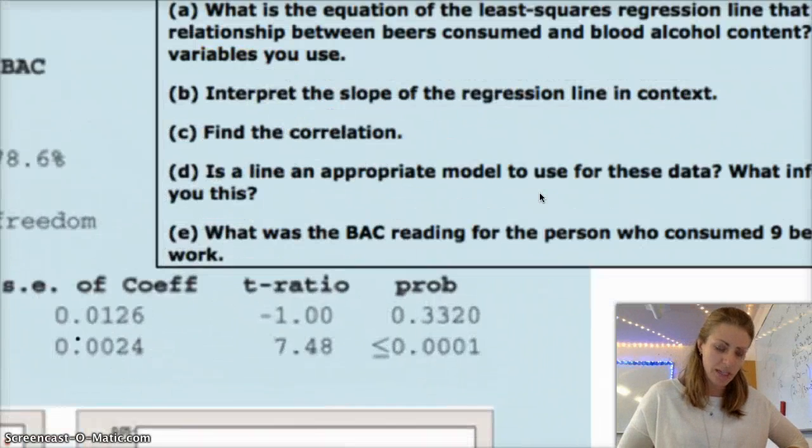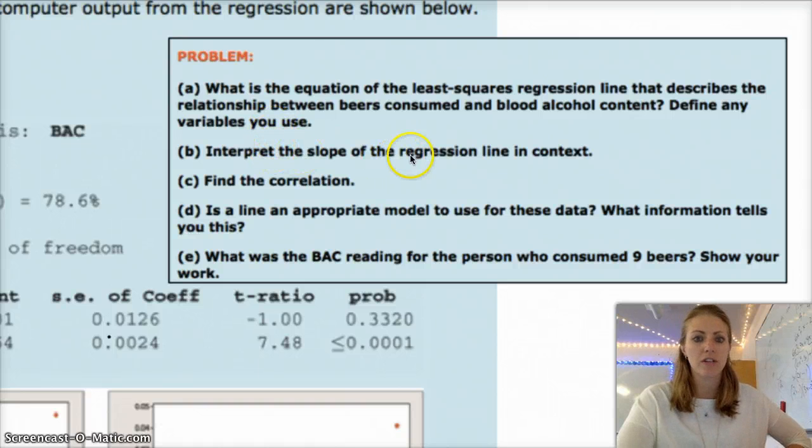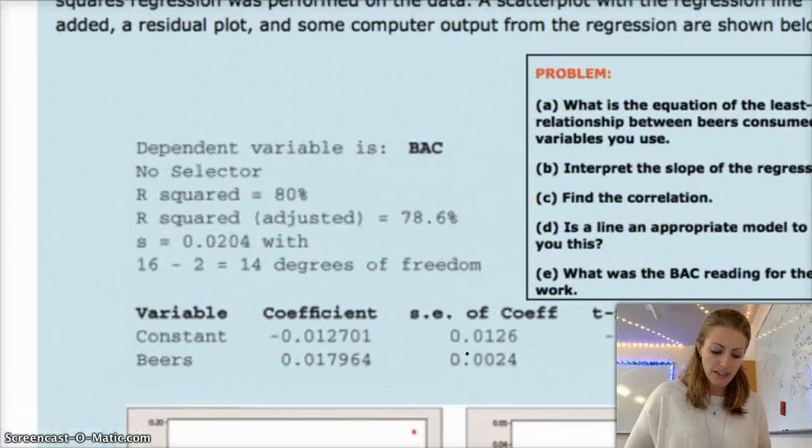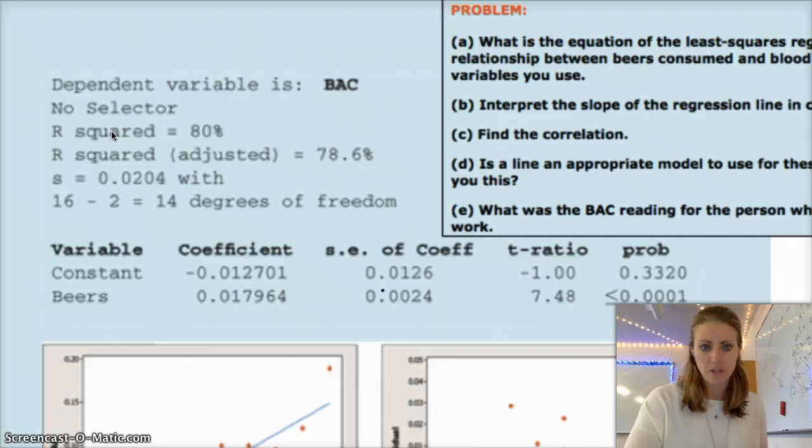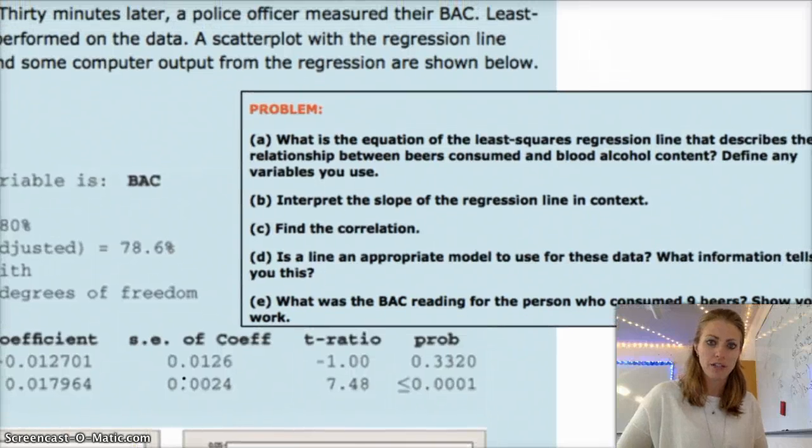Okay, so here are your questions. I'm going to kind of zoom in on the questions there for a second. It says, what's the equation of the LSRL? And then interpret to find any variables you lose. Interpret the slope of the regression line. Find the correlation. Is the line appropriate model for the data? And what tells you that? And then what was the BAC reading for the person who consumed nine beers? Show your work. So you need the computer output, which is here, in order to answer some of those questions. And then you also, sorry, I'm zooming in because, like, the quality of the thing is not that great. And then also you're also given these two graphs. So this one's the BAC in beers, and this one says residual in beers. So go ahead and try those problems on your own first. And then you can continue the video, and I'll explain how to do it.